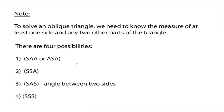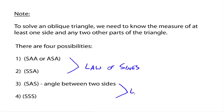These first situations — where you know a side and two angles (SAA or ASA), or two sides in a row and then the next angle (SSA) — can be solved using the law of sines. The last two situations, side-angle-side and side-side-side, can be solved using the law of cosines, which we'll see in another video.